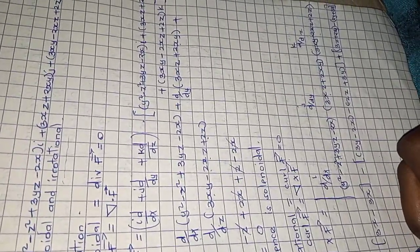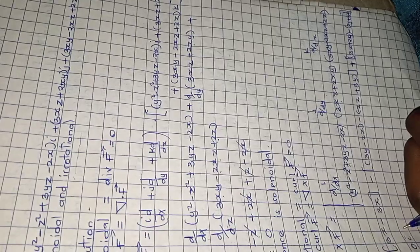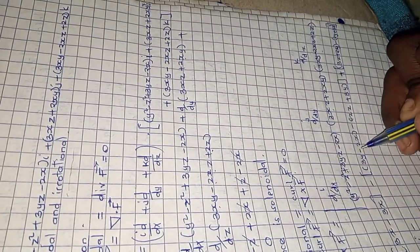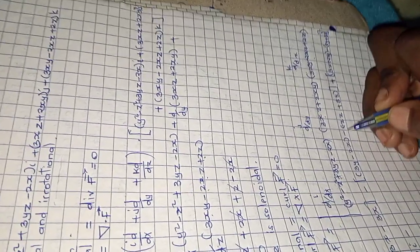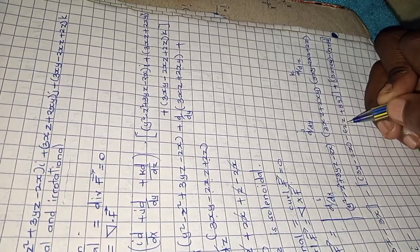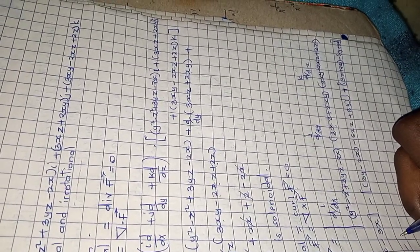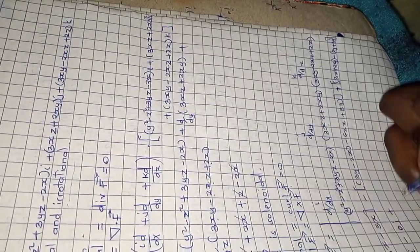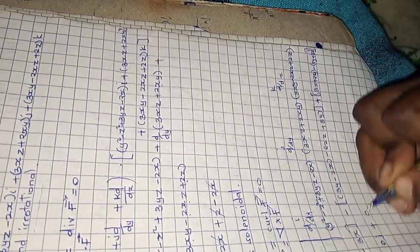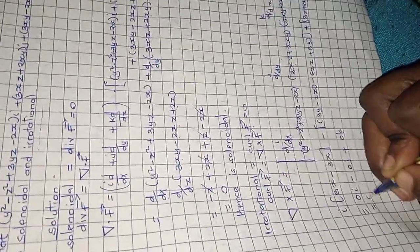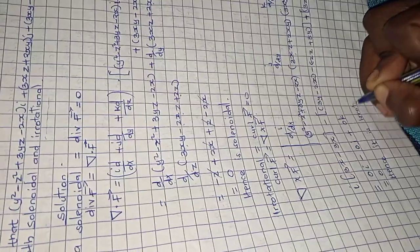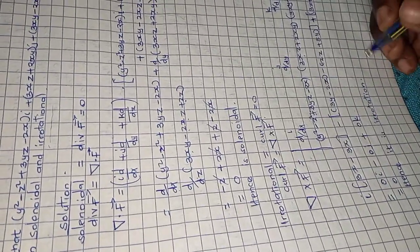Collecting results: the i component is 0, the j component cancels to 0, and the k component also equals 0. Therefore curl F = 0i + 0j + 0k = 0, which means the vector field is irrotational.